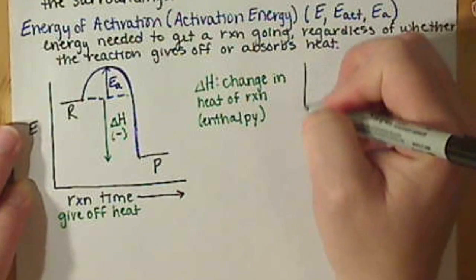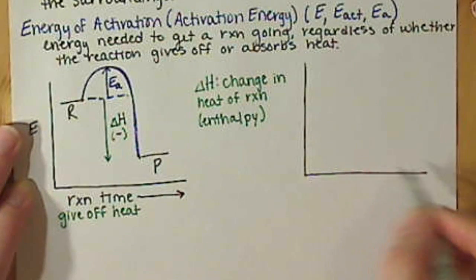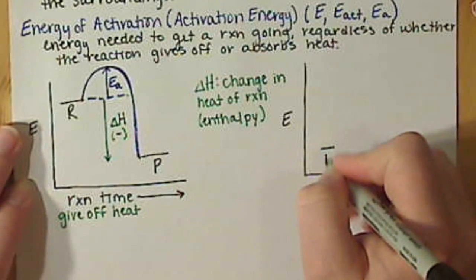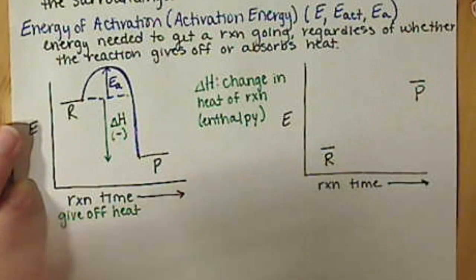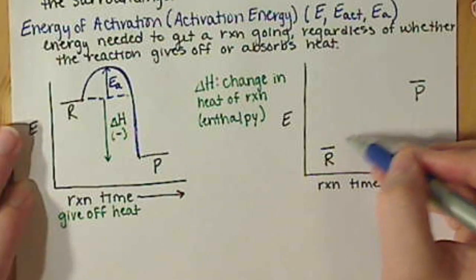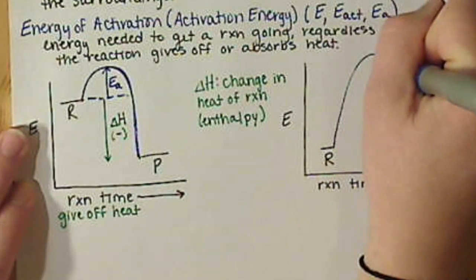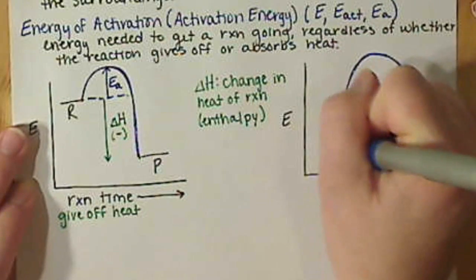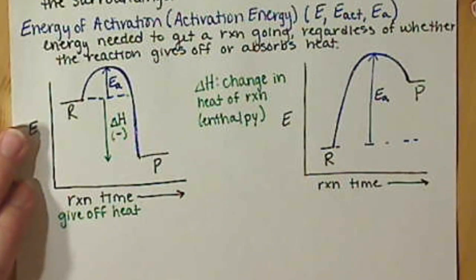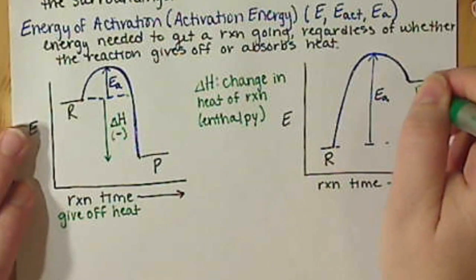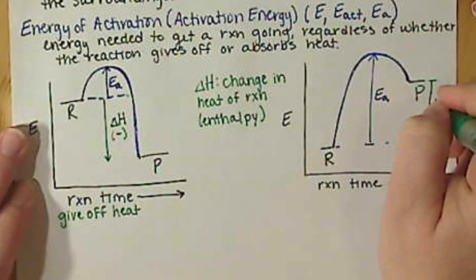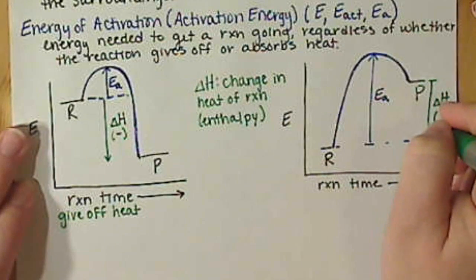We can also have reactions that absorb heat — so overall they need an extra amount of energy — but that's still going to require that energy of activation. So yes, we have an overall uphill battle or uphill climb to make, and it's actually bigger than what you would think because we still have an energy of activation barrier to overcome. Our delta H in this case is going to be the difference between our reactants and our products, just like before. So our delta H in this case is going to be positive — we're going to have to add energy, so this is going to absorb heat.